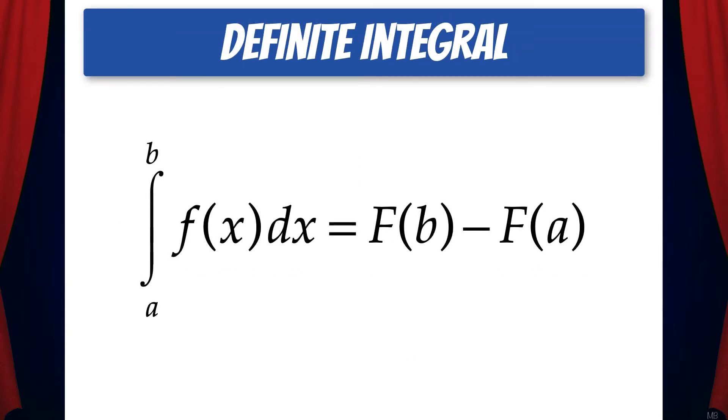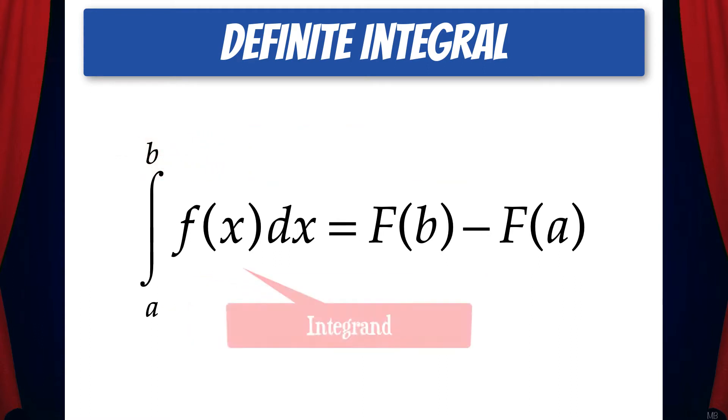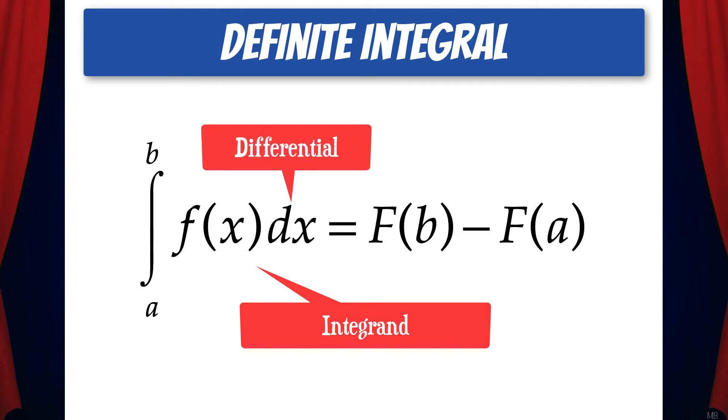So let's take a look at the notation. Here we have the integral from a to b of little f of x dx. a is called the lower limit of integration, and b is called the upper limit of integration. Little f of x dx is the integrand, and remember dx is called the differential.